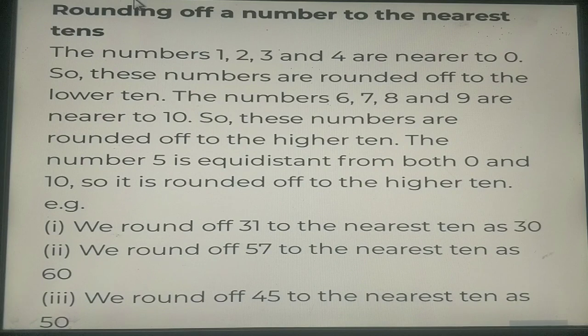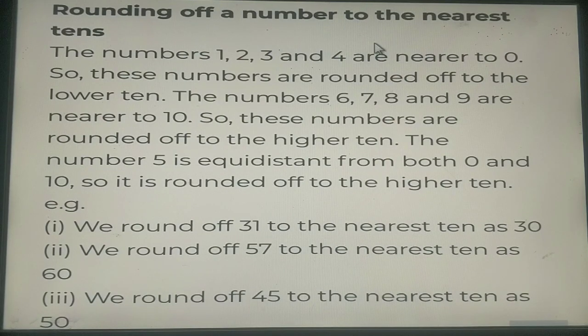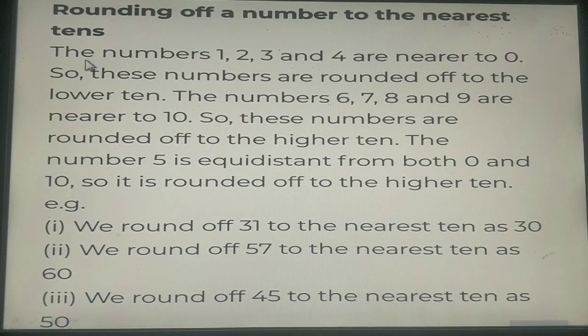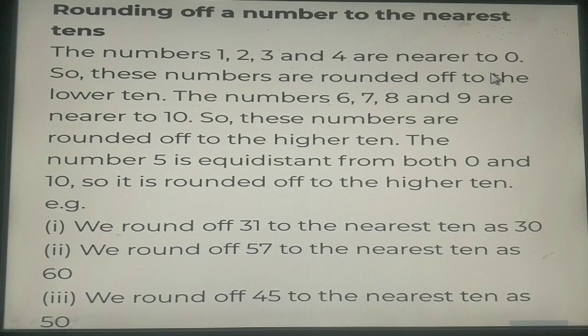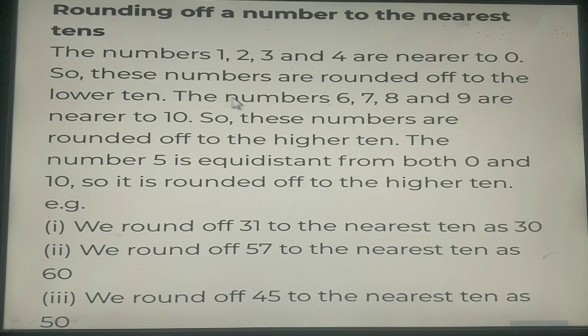Here is some explanation for you children. Rounding off a number to the nearest tens. The numbers 1, 2, 3 and 4 are nearer to 0. So these numbers are rounded off to the lower 10.